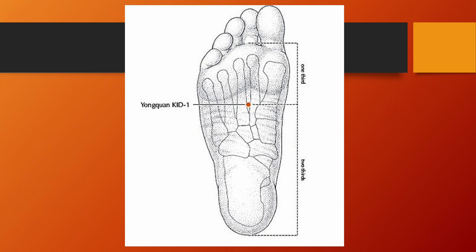Kidney 1, Yongquan or gushing spring, is located on the sole in the depression when the foot is in plantar flexion, approximately at the anterior third and posterior two-thirds of the line from the web between the second and third toes to the back of the heel. Jingwell point of the kidney channel. Functions: descends excess above, resuscitates, clears heat, tonifies yin, clears empty heat. Kidney 1 is an excellent point to subdue excess liver yang, wind, and/or fire. Needling: perpendicular insertion, 0.5 to 1 tsun.